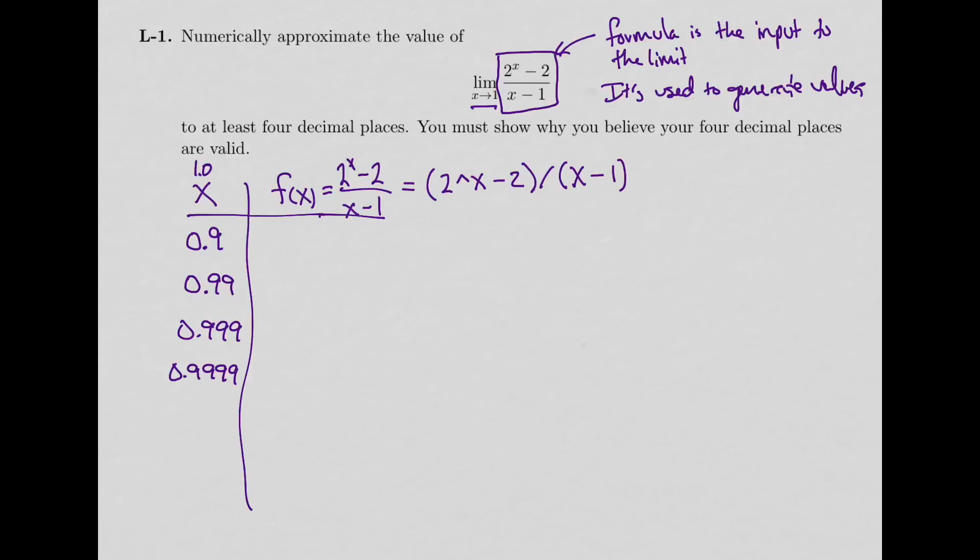So what do we get? I have 2 to the power of 0.9 minus 2, close parentheses, divided by 0.9 minus 1 in parentheses, and I get 1.33934. Now I need 4 decimal places, so I'm going to go past the spot where I get 4 decimal places. So I have 1.339 and then some additional digits.